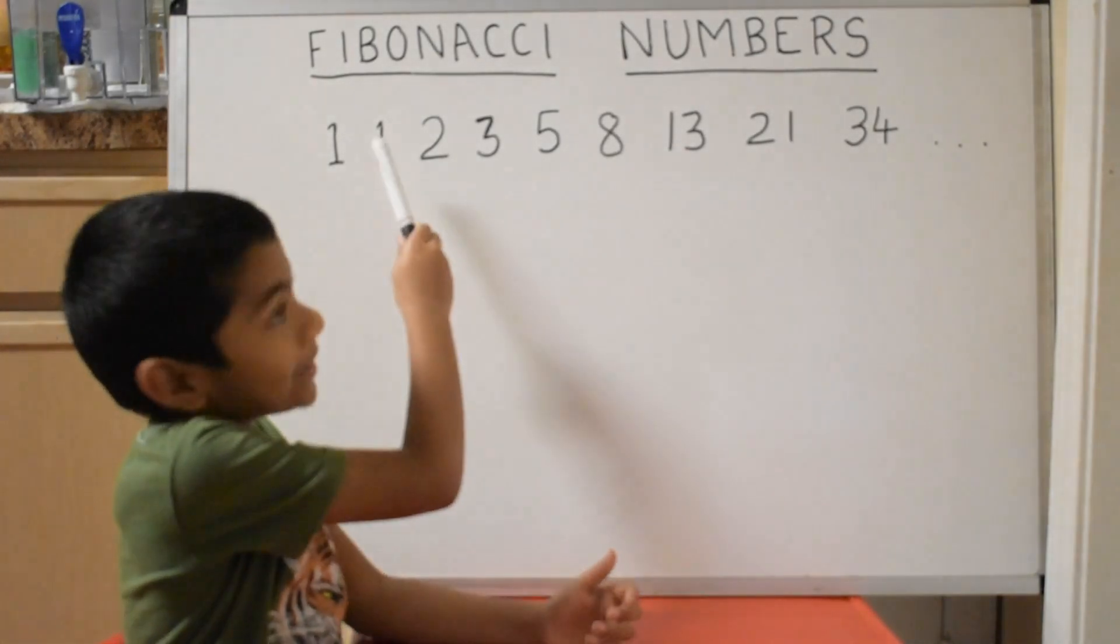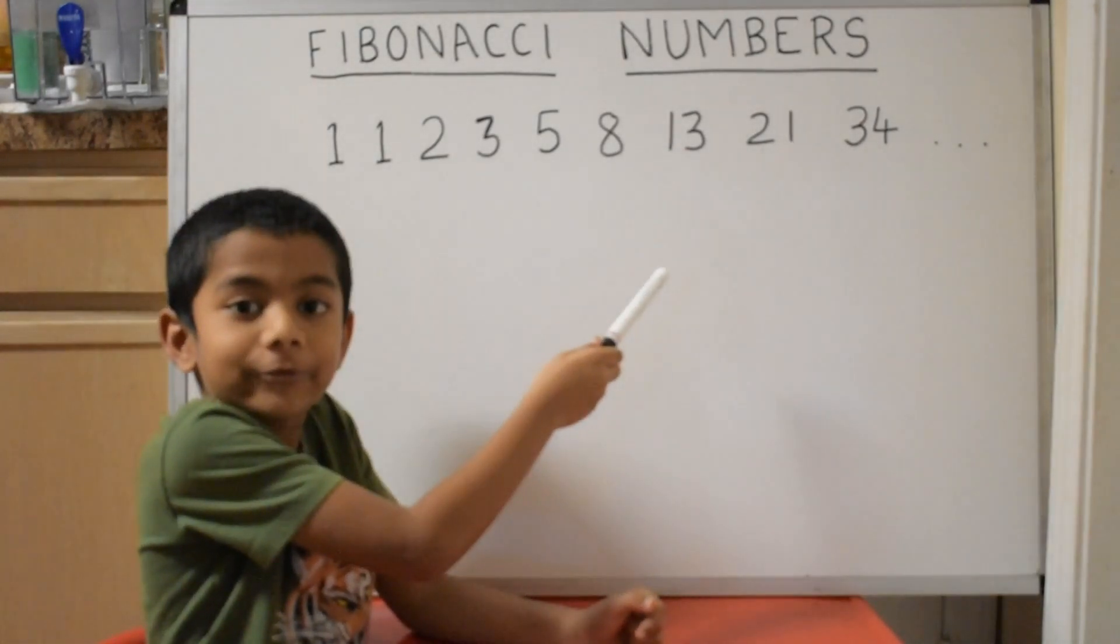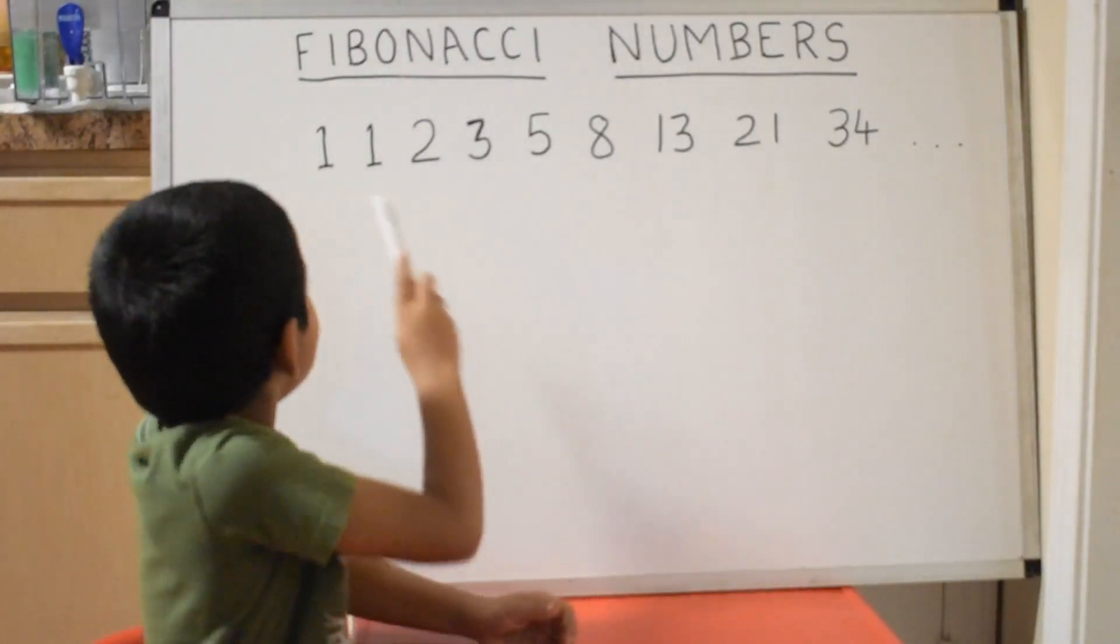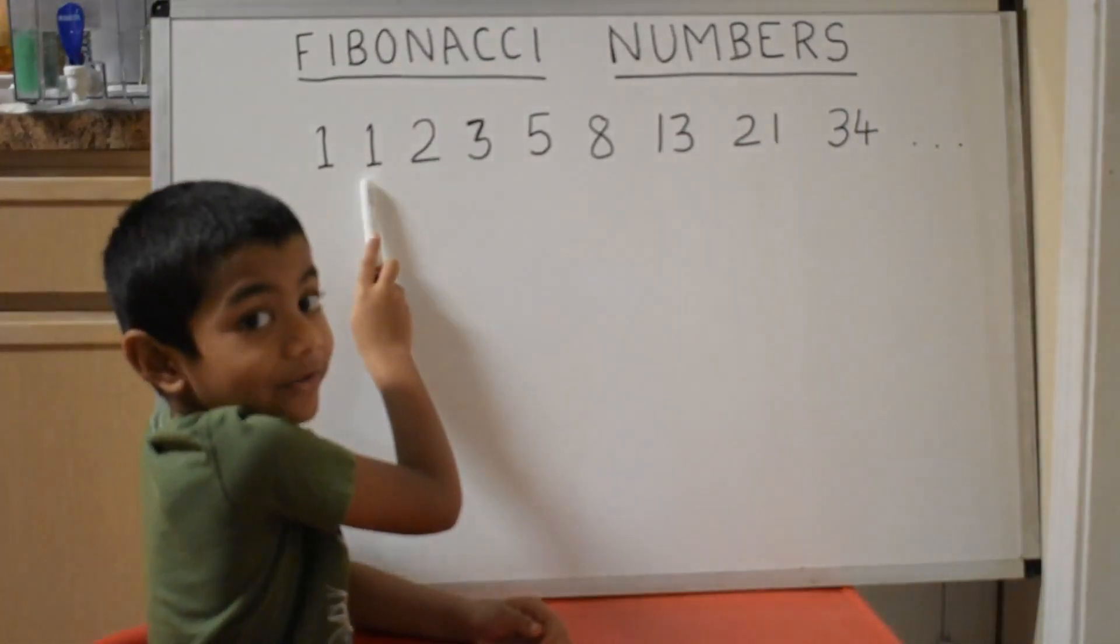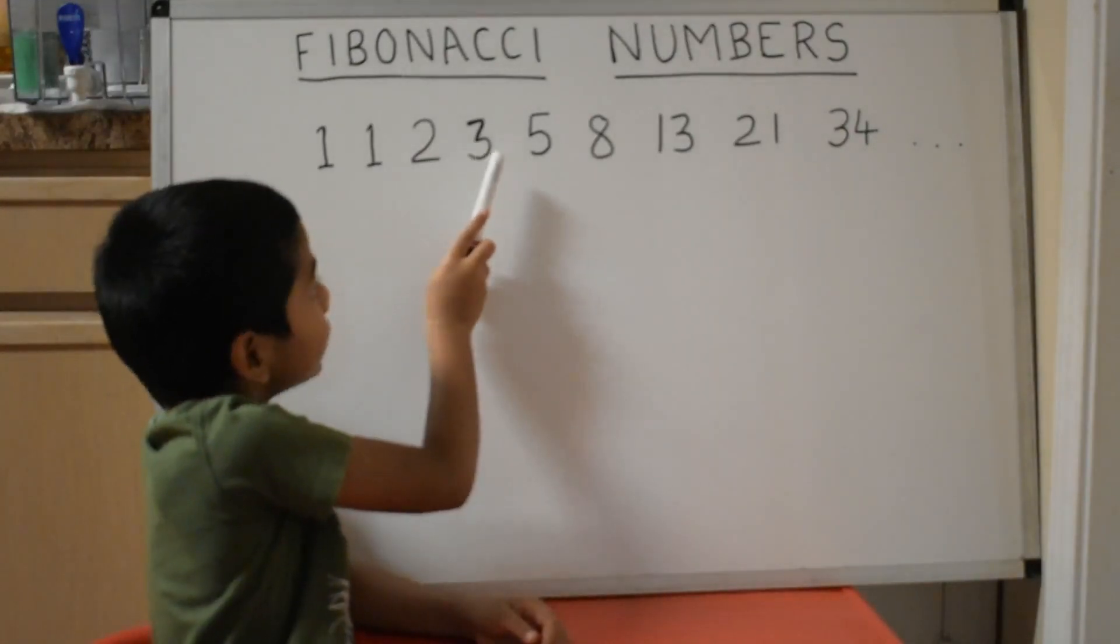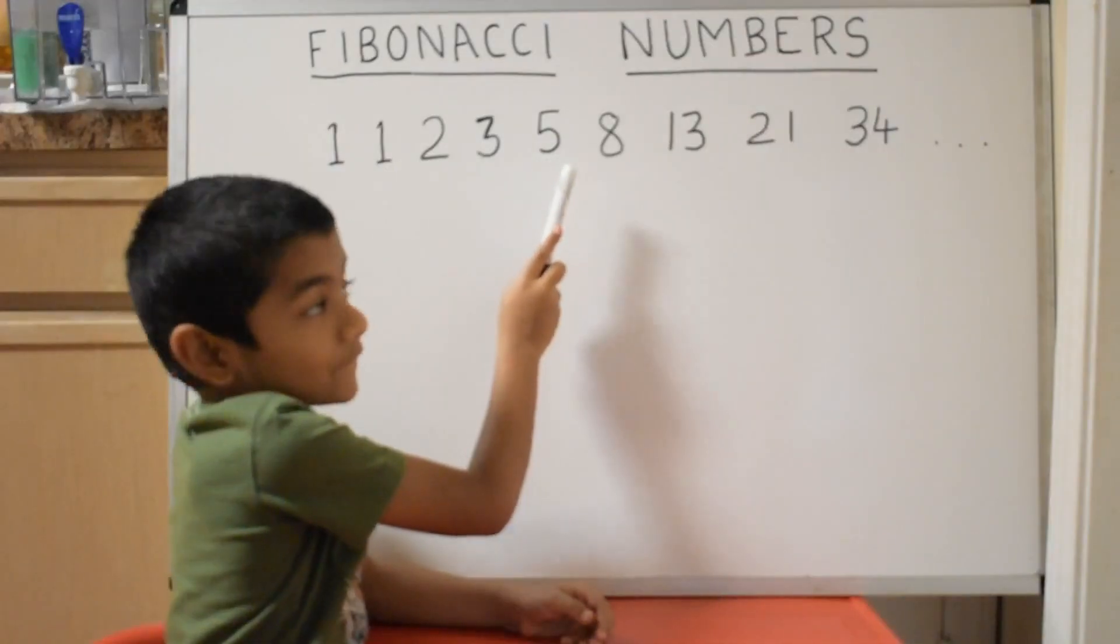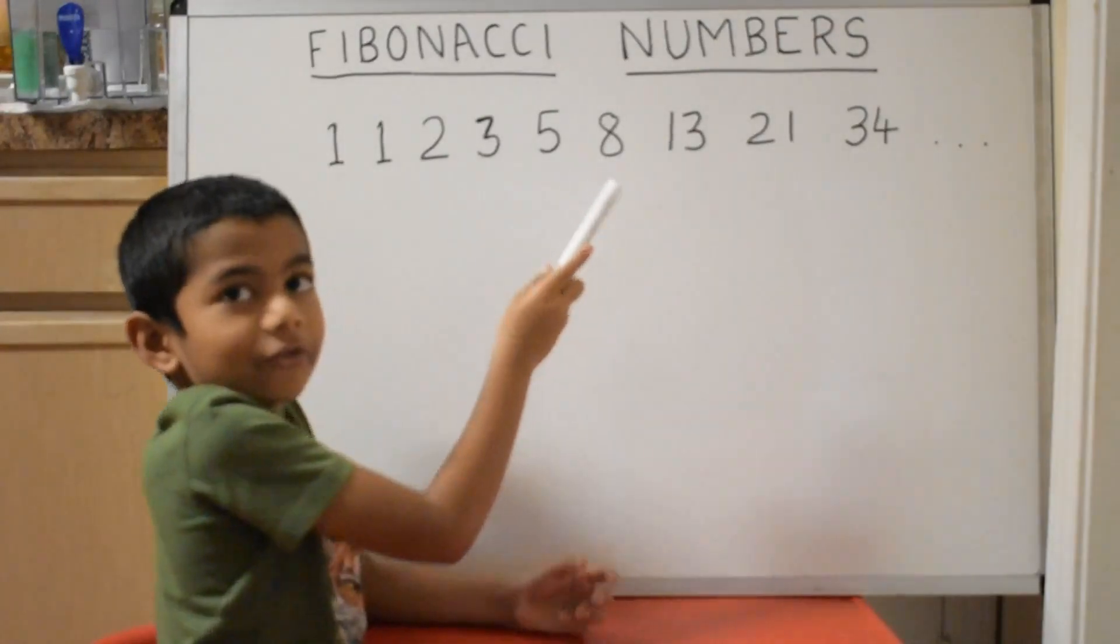Hey guys, today we're going to talk about Fibonacci numbers. It is a number pattern. It starts with two number 1s and it goes like this: 2, 3, 5, 8 and so on.